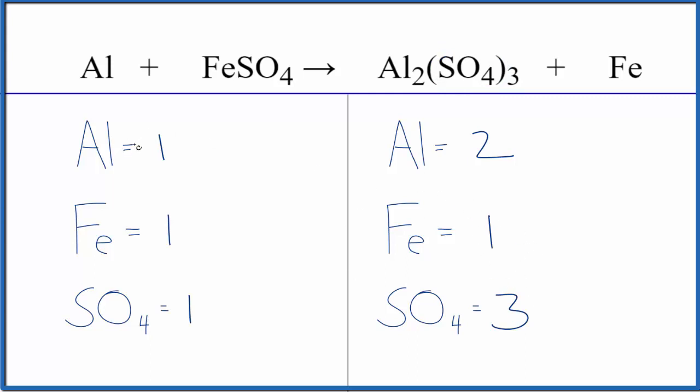I can see right away I have one aluminum here and two here, but I'm going to leave the aluminum to last, leave the iron to last as well. Since they're by themselves, when I change those, nothing else will change. So I'm going to balance the sulfates. I'm going to put a three here, one times three.